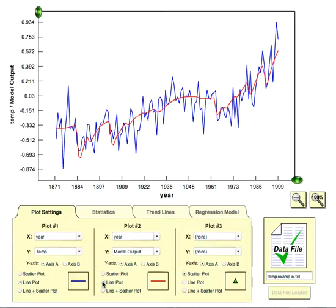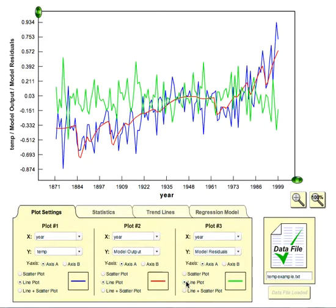It explains just under 72% of the variation in the data. And if we look at the residuals from that regression, model residuals, they look pretty random. There doesn't seem to be a whole lot of structure, although there is quite a bit of interannual variability.